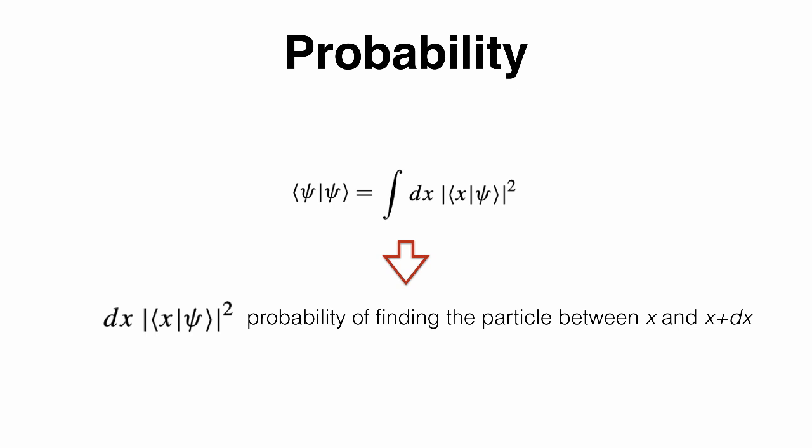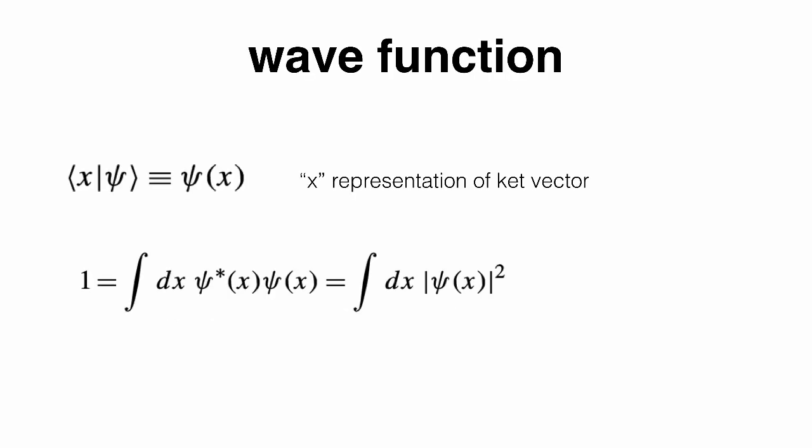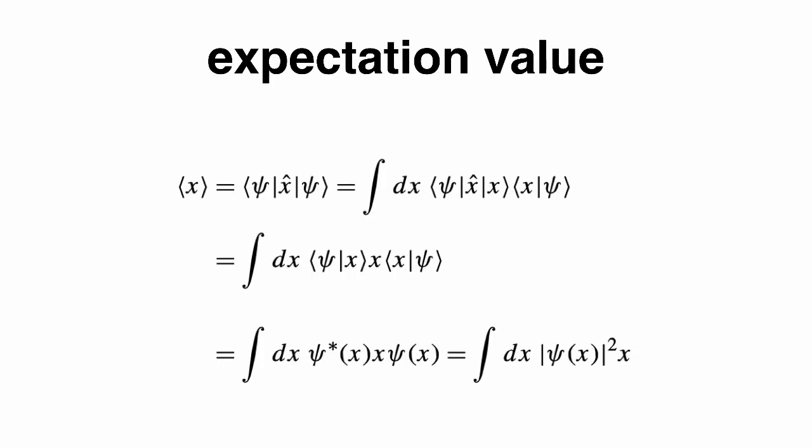The bracket ⟨x|ψ⟩ is very important. We can decide to call it ψ(x) — a function of x, a number that depends on x. This is what we call the wave function. We can replace ⟨x|ψ⟩ by the wave function ψ(x), and ⟨ψ|x⟩ by the complex conjugate ψ*(x), and then you get back to the familiar formulation. The 1 on the left-hand side of the completeness relation is a number, not an operator.